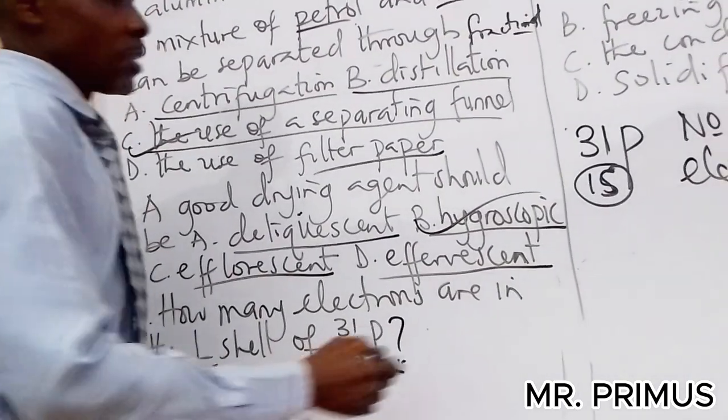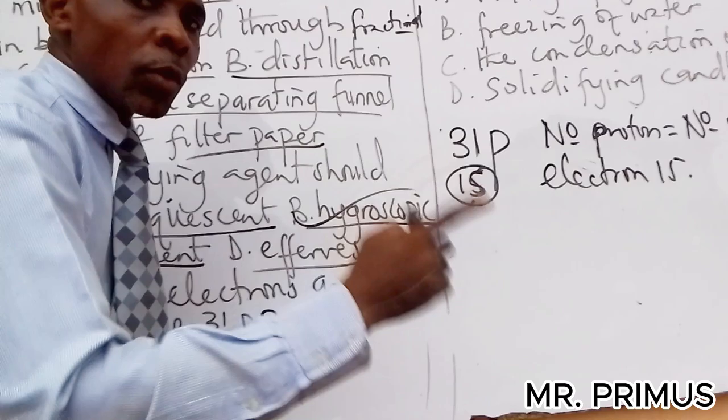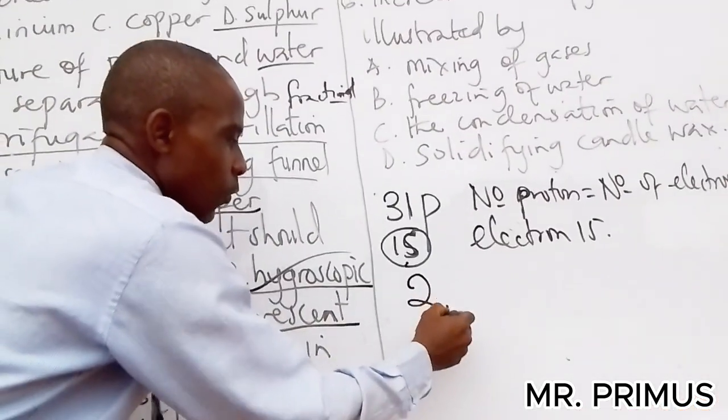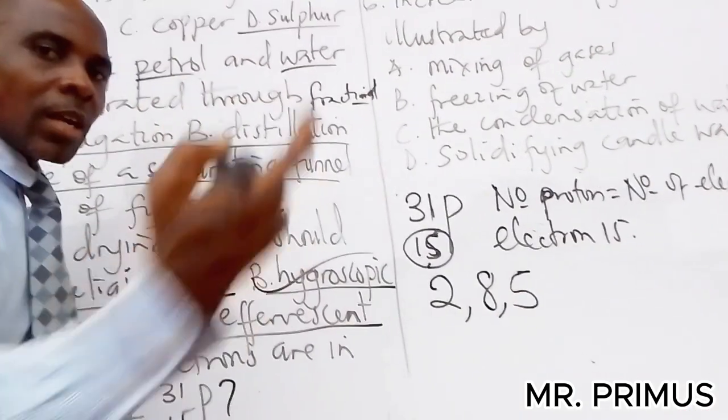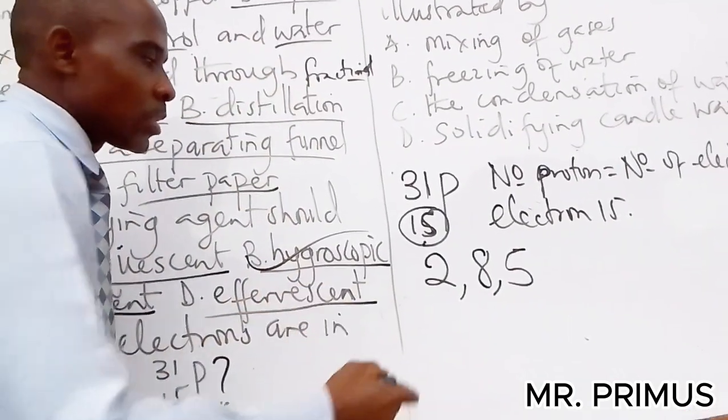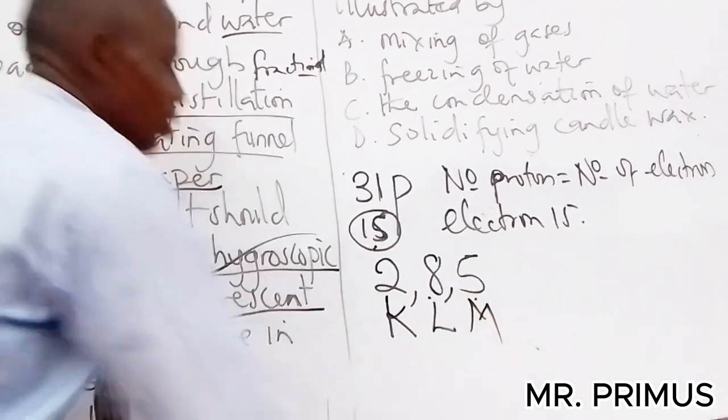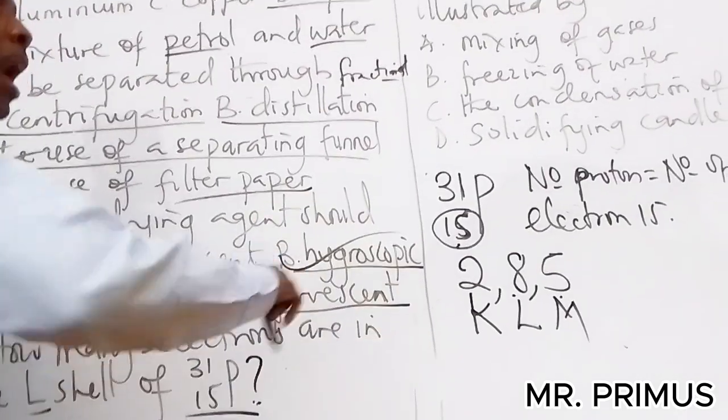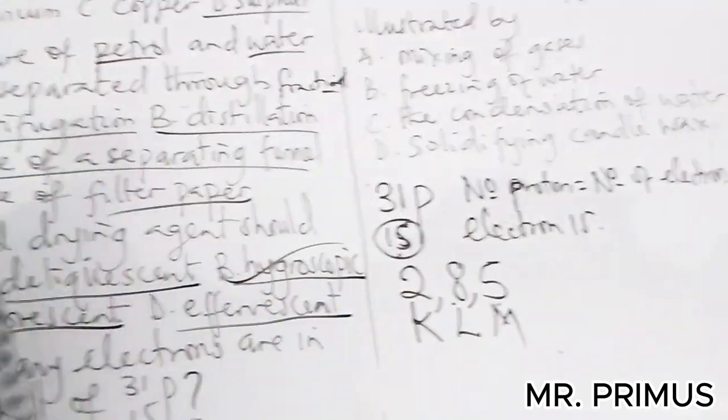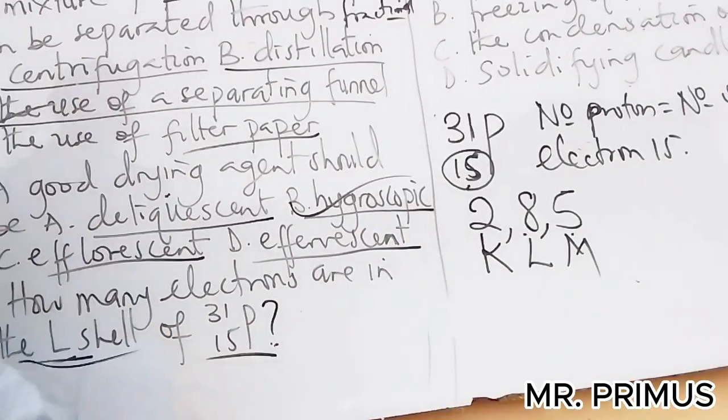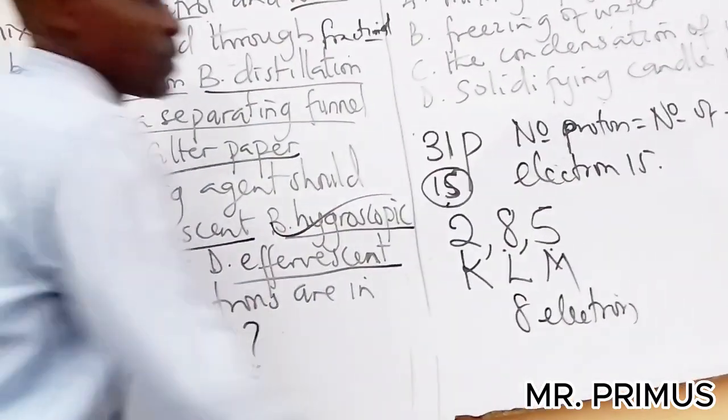For us to get L shell, we need to configure this using duplet and octet configuration. So 15 is first one filled, second one filled, and the third one - check our last video on the periodic table. 2-8-5. So this is K shell, L shell, M shell. If they ask you how many electrons does it have in M shell? Five. L shell? Eight. K shell? Two.